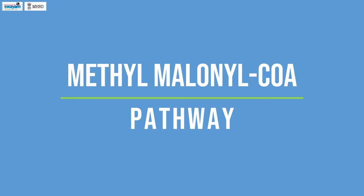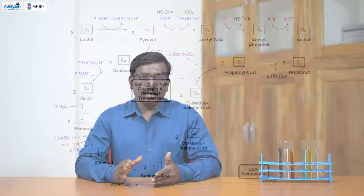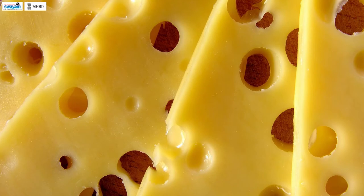Methyl-Malonyl-CoA Pathway. This pathway is carried out by propionic acid bacteria. Similar to the acrylate pathway, one mole of lactate is oxidized to acetate. The remaining lactate molecules are oxidized to pyruvate. The pyruvate is carboxylated to oxaloacetate and then reduced to succinyl-CoA. The succinyl-CoA undergoes rearrangement to form methyl-malonyl-CoA, which is subsequently decarboxylated to propionyl-CoA and ultimately converted to propionate.